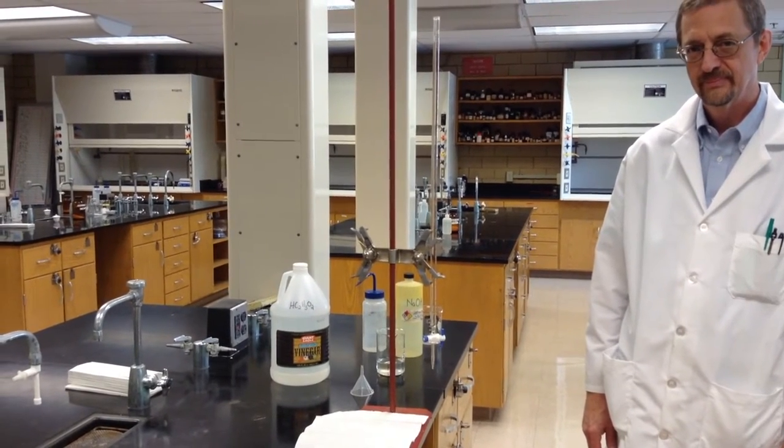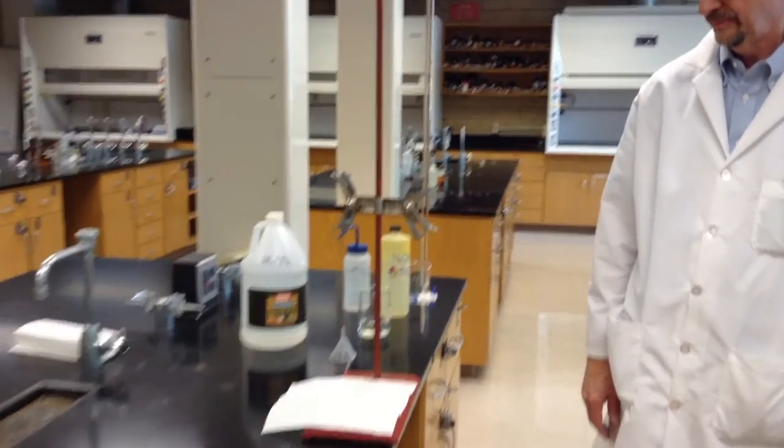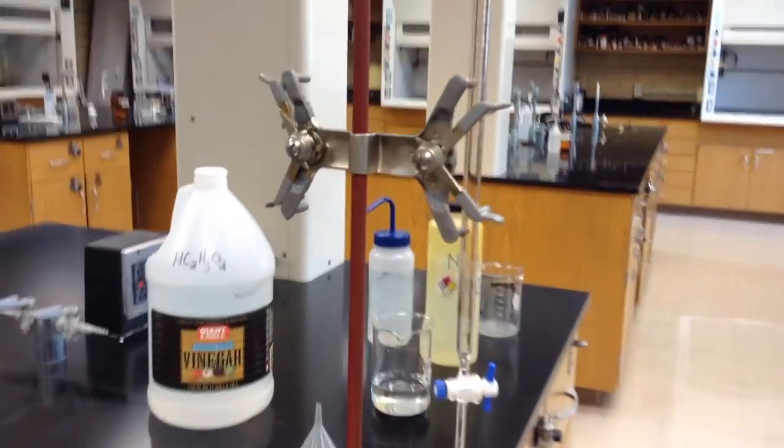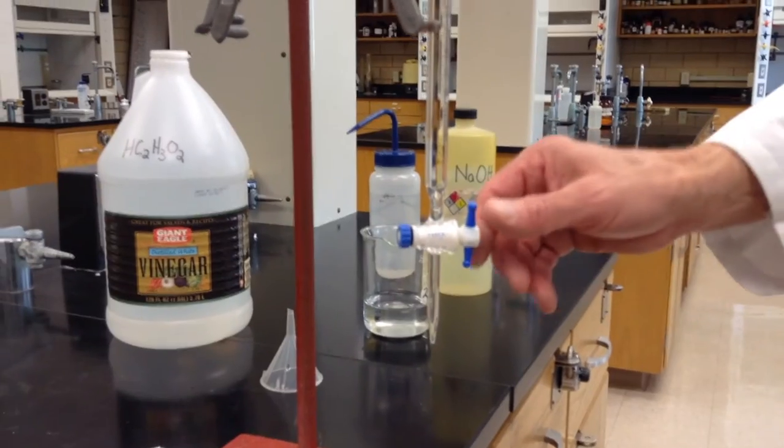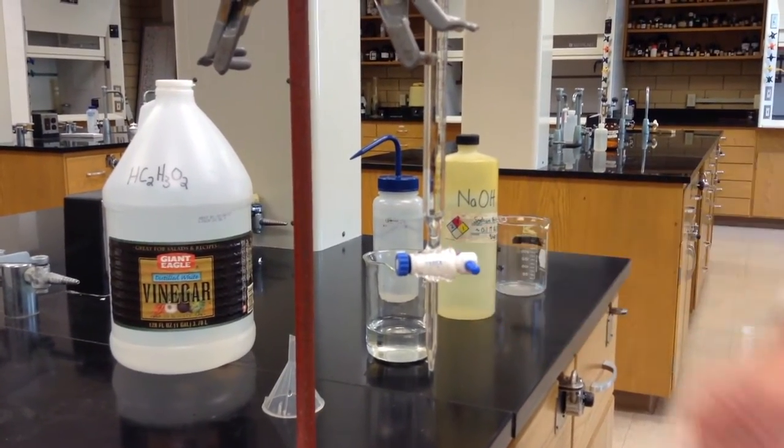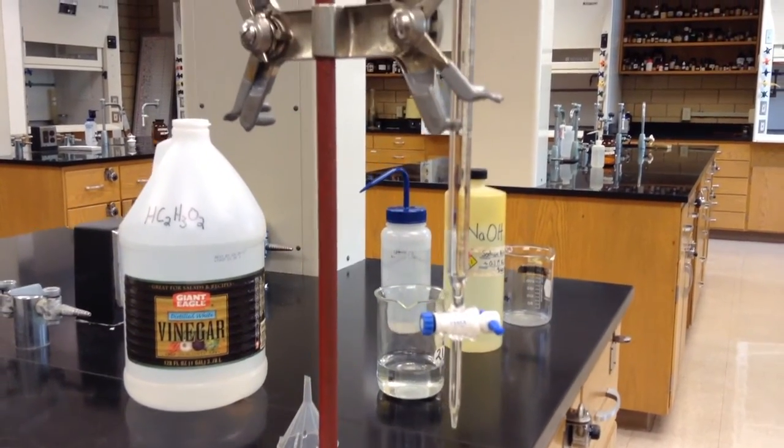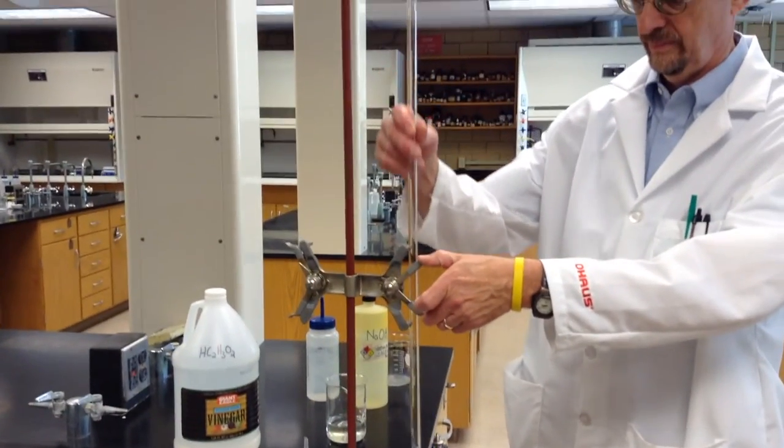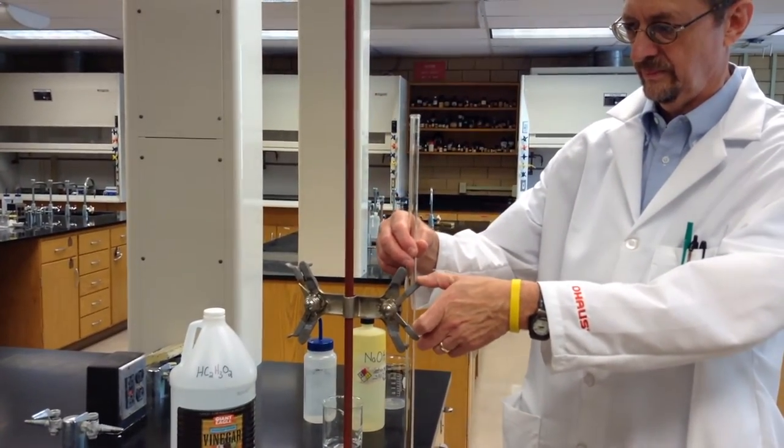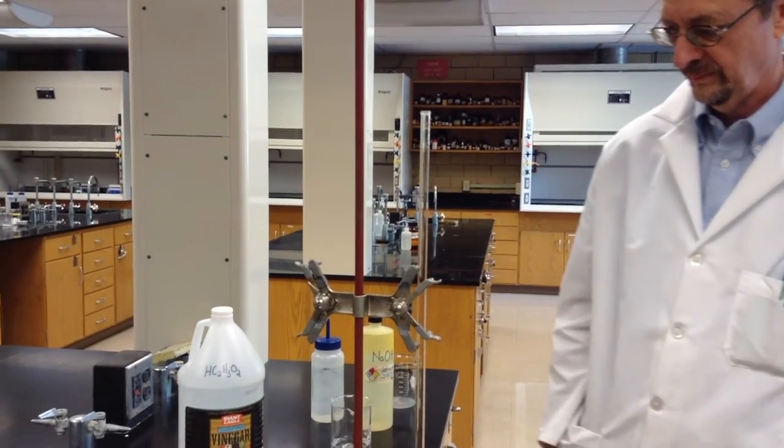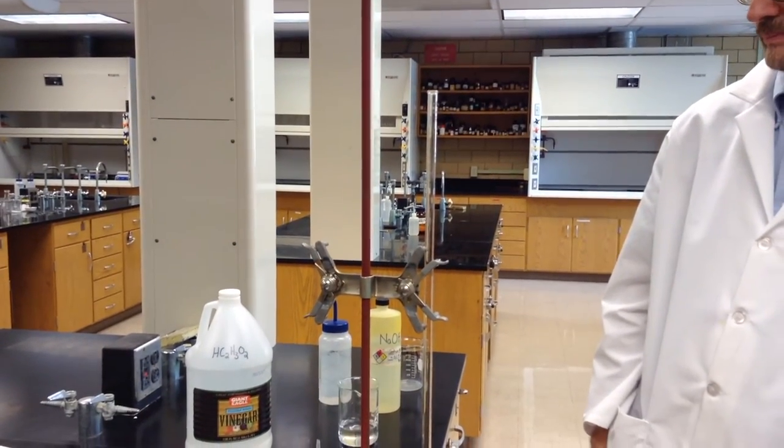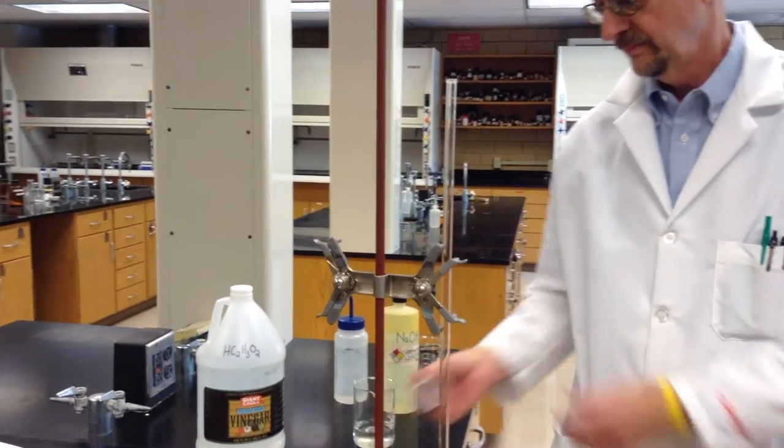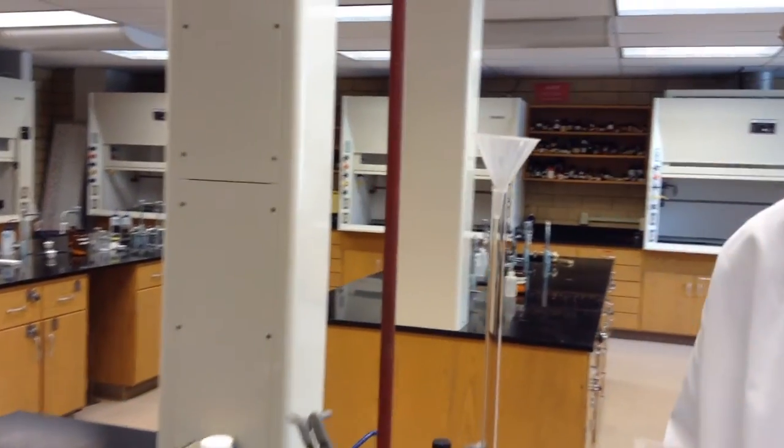The first thing that we want to do is rinse the burette to make sure it is clean. To do this, we first want to close the stopcock. We do that by turning the handle until it is parallel to the ground. Next, to add our rinse agent, we want to move the burette down in its clamp below eye level. Also, to be safe, we want to make sure that we use a funnel in the top of the burette so that we prevent spillage.